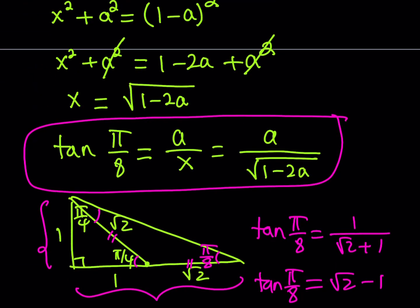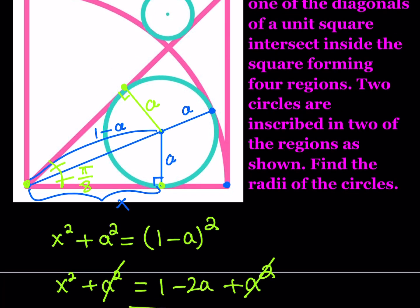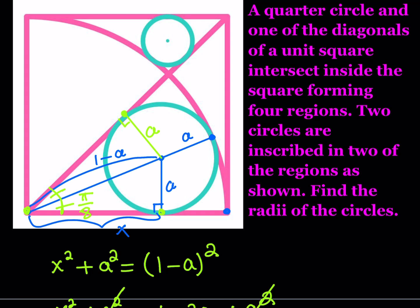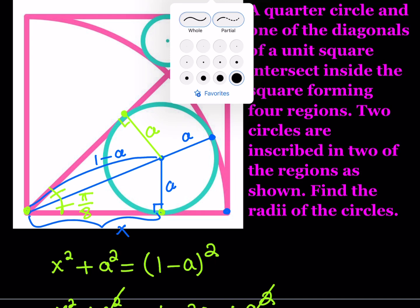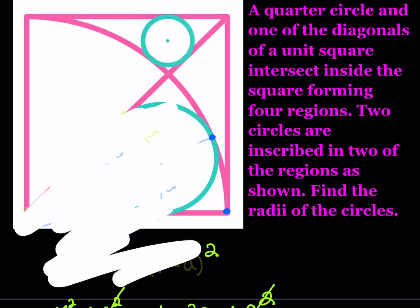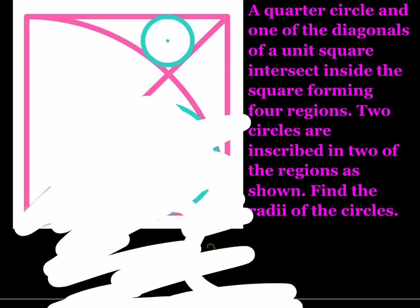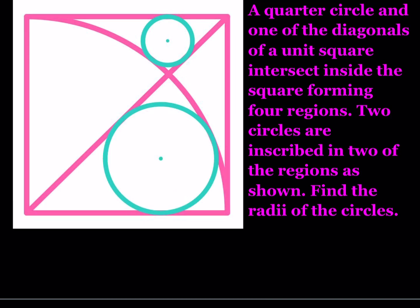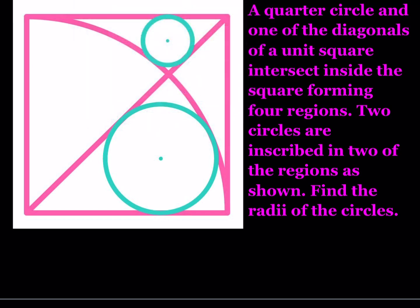Now let's find the other radius, which I'll call b. Let me clean up a bit, then make more connections. I'll connect the center of the quarter circle to the center of the smaller circle. That's the center of the quarter circle — the large one — and I'm going to connect it to the center of the smaller circle, calling that radius b.